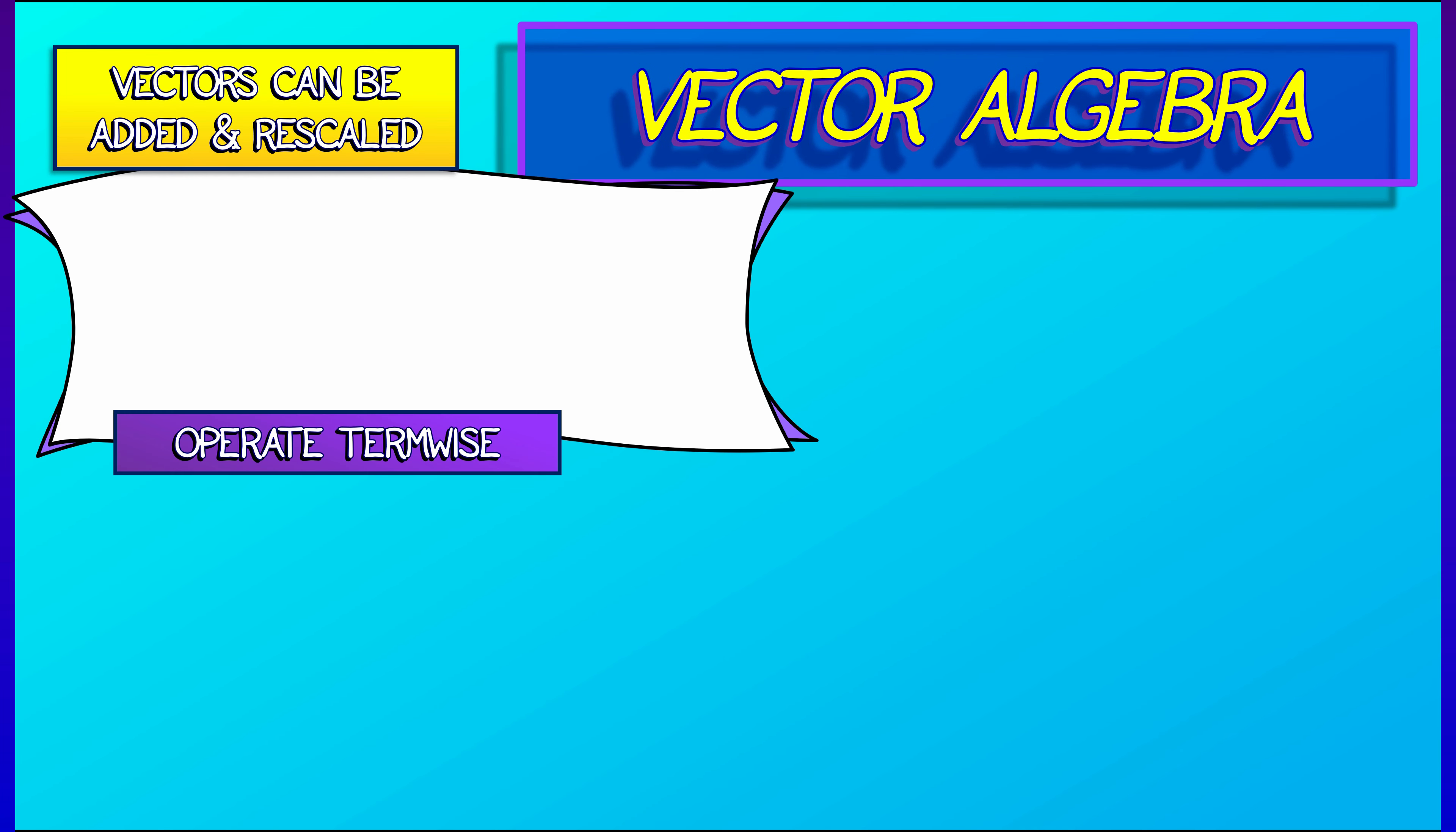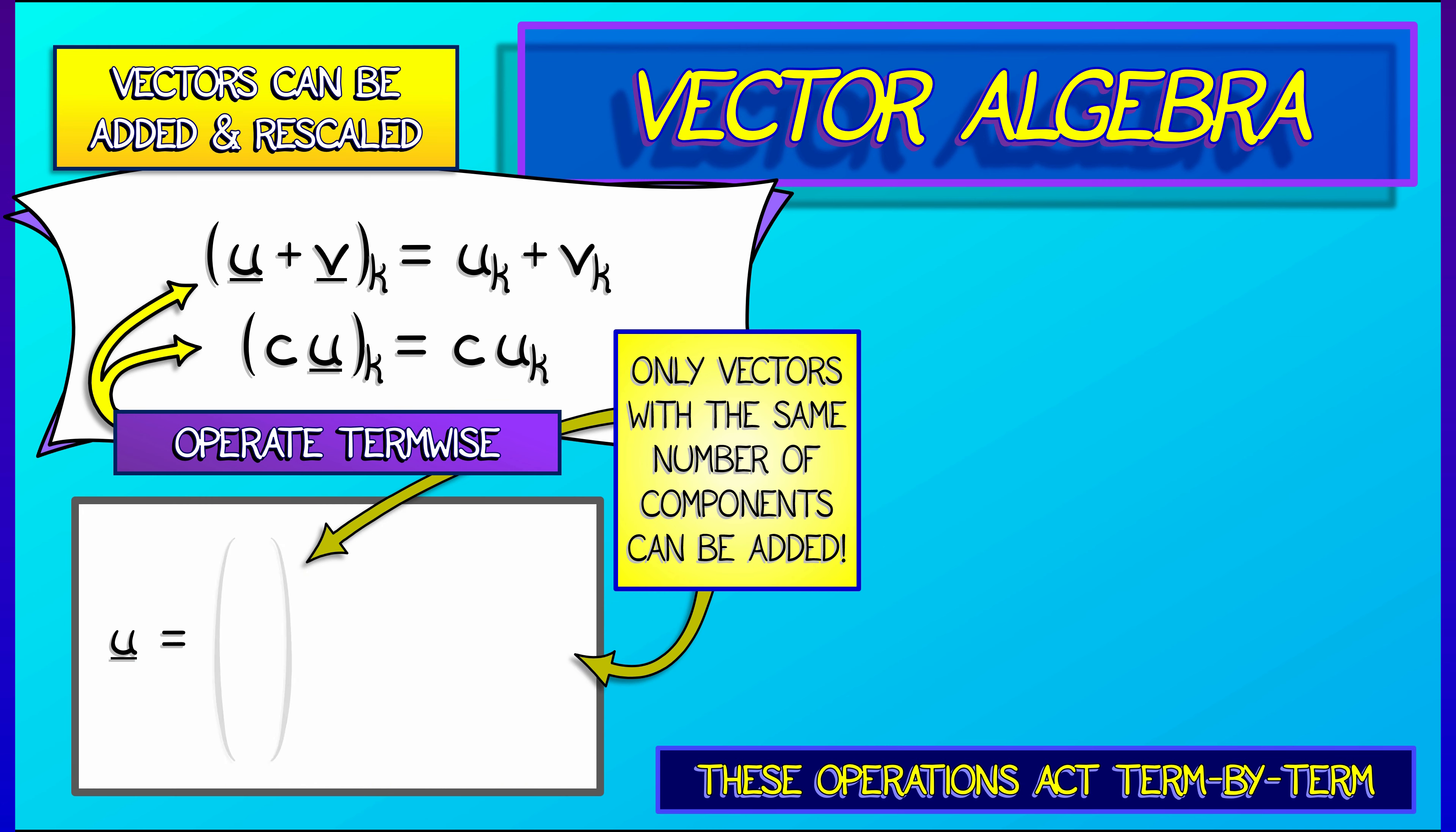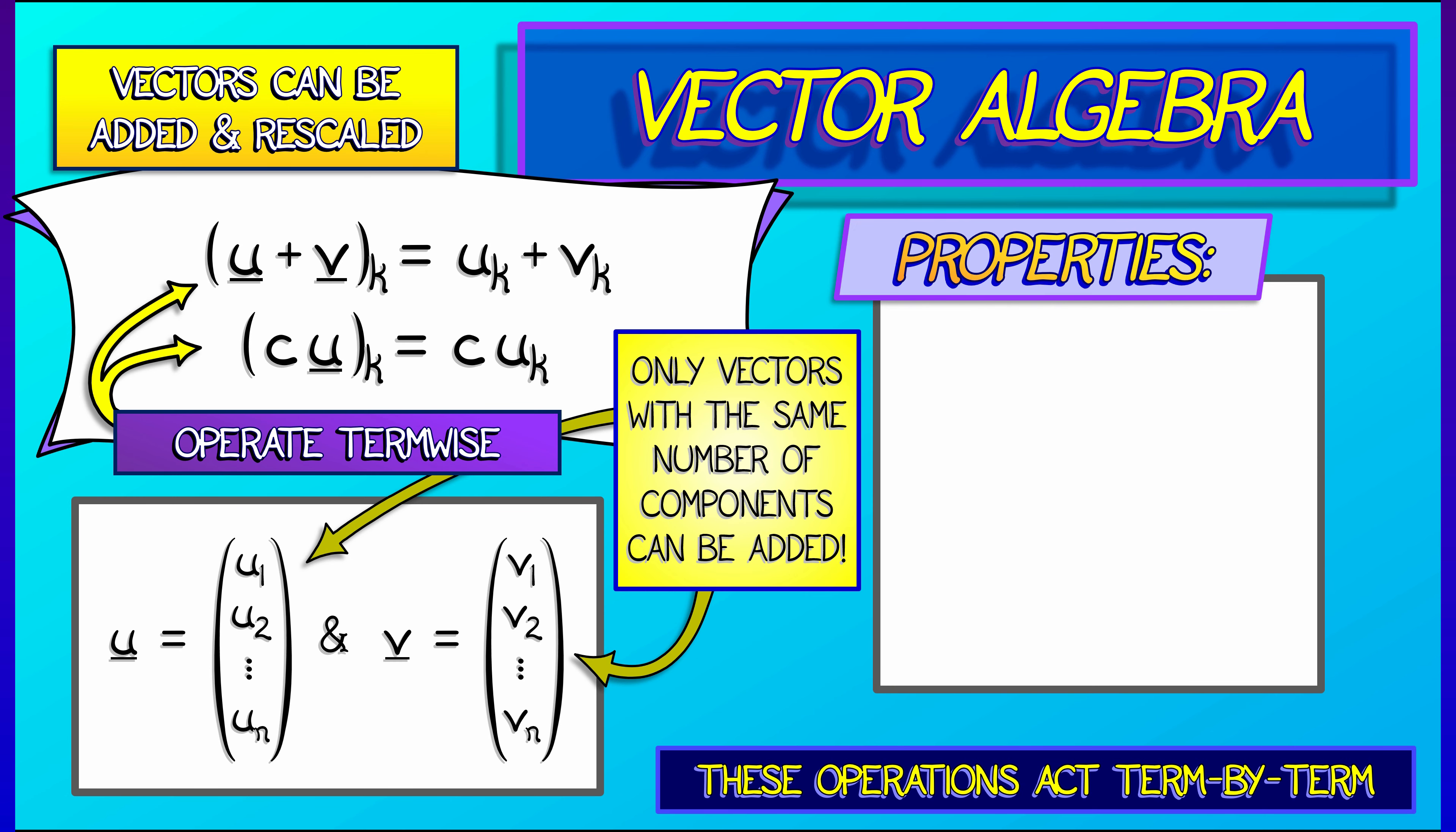Given two vectors, u and v, their sum has kth component equal to the kth component of u plus the kth component of v. Rescaling a vector u by some constant c means rescaling each component, so both of these operations just act term by term. That's really simple. But there's one thing you need to be careful of. When doing a vector addition, make sure the vectors are the same size—they have the same number of components. Otherwise, you can't do that.